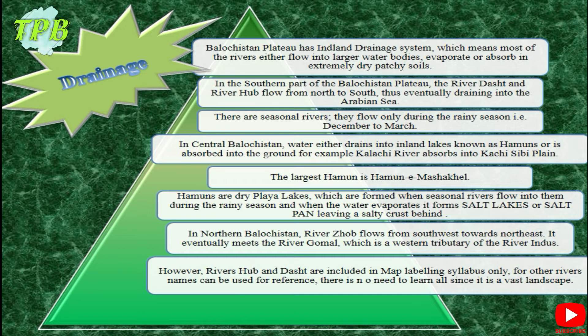In central Balochistan, water either drains into inland lakes known as hamuns or is absorbed into the ground. For example, the Kalachi River absorbs into the Kachi-Sibbi Plain. The largest hamun is Hamun-e-Mashkel. Hamuns are dry lakes, known geographically as playa lakes, formed when seasonal rivers flow into depressions or rainwater collects there. When the water evaporates, it forms salt lakes or salt pans, leaving a salty crust. The water is so brackish it cannot be consumed or used industrially.